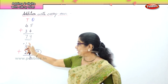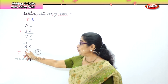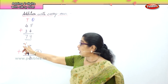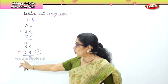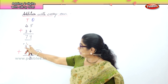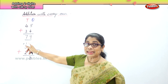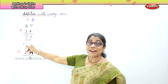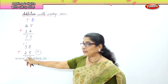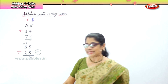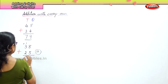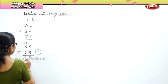So you carry over the one ten and put it in the tens place. Now you add all the tens: three tens plus one ten makes four tens, four tens plus two tens makes six tens. So now we have sixty-three.